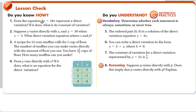Lesson check: Does the equation 6y equals 18x represent direct variation? Yes — divide both sides by 6, and the constant of variation is 3, since 18 over 6 equals 3. Suppose y varies directly with x and y is 30 when x is 3. That makes k equal to 10, so the equation is y equals 10x.